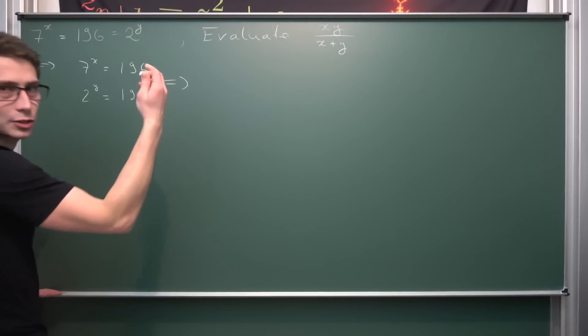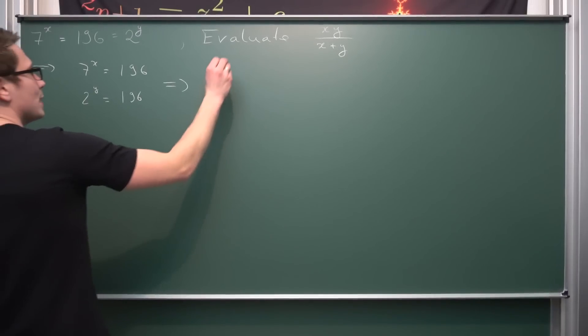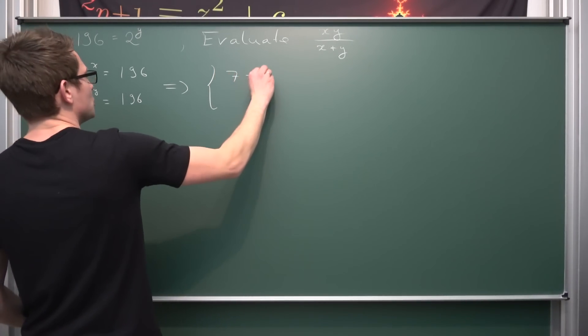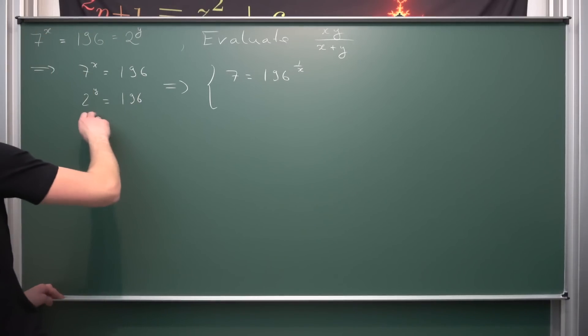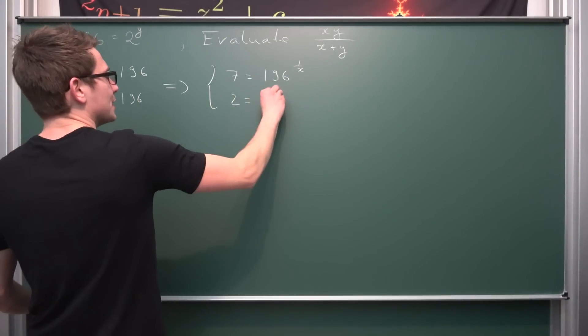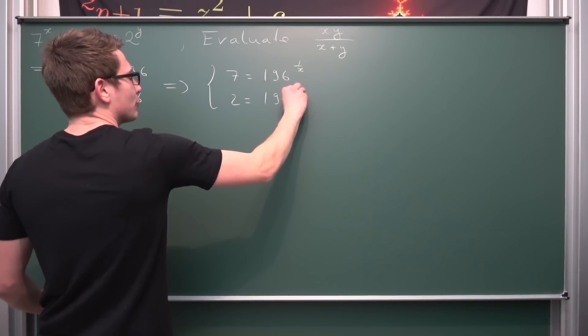We now got two equations once again. These two equations being that 7 is equal to 196 to the 1 over x power and also 2 is equal to 196 to the 1 over y power.